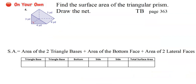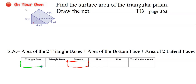Now we have an On Your Own problem. Pause the video, try to draw the net, and put the area of each of the five faces in the graphic organizer. I'll show you what I would do. I'm going to keep the same color coding from the example: the bottom in red, the triangle bases in green, one side in blue, and the other side in orange.